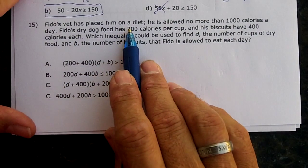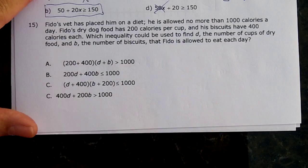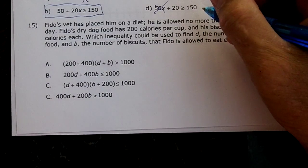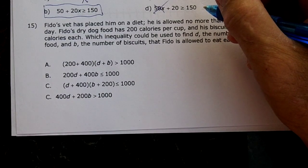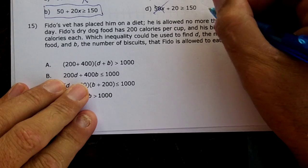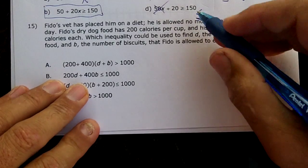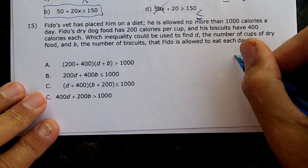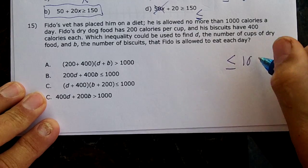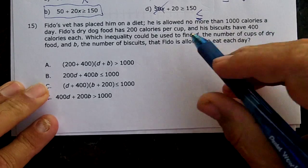Fido's vet has placed him on a diet. Oh no! He is allowed no more than—'no more than' means less than or equal to. So we know we're going to have less than or equal to a thousand.